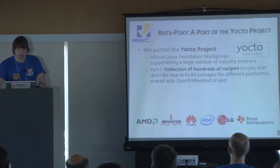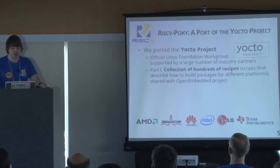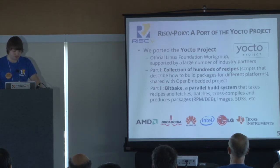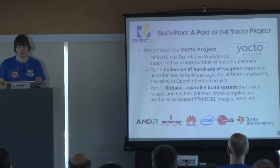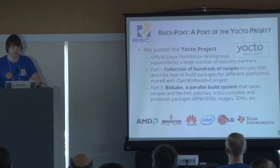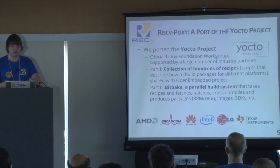Yocto consists of two parts. The first is a collection of hundreds of what are called recipes — scripts written in a combination of Bash and Python that describe how to build different packages for different platforms. This collection is maintained in collaboration with the OpenEmbedded project. The second part of Yocto is a tool called BitBake, which is a parallel build system that takes these recipes and configuration files and automatically fetches the sources for everything it wants to build, applies any patches, cross-compiles them, manages the sysroot for you, and creates images or RPM or Debian packages and SDKs.